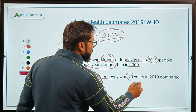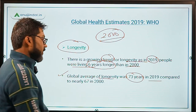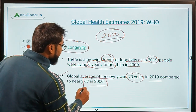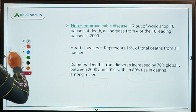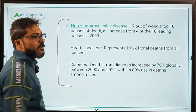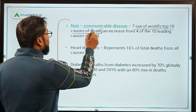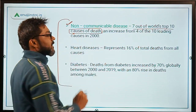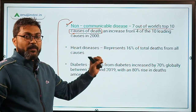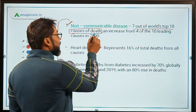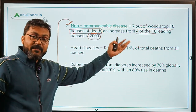The global average longevity was 73 years in 2019 as compared to 67 in 2000. According to this report, 7 out of the world's top 10 causes of death are due to non-communicable diseases. In 2000 it was 4 out of 10, but in 2019 it has increased to 7 out of 10.